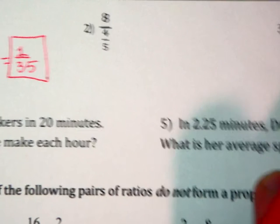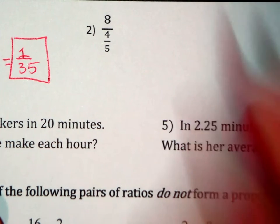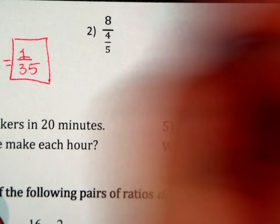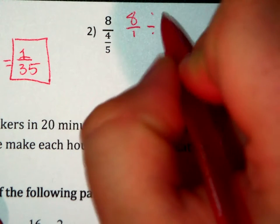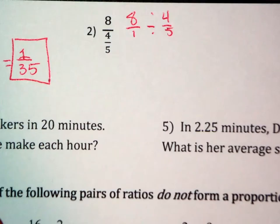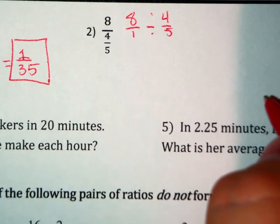Number 2. 8 divided by 4 fifths. Well, this is the fraction 8 over 1 divided by 4 fifths. Again, you keep it, change it, flip it.